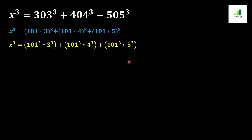In the next step, we take 101³ as a common factor from the whole expression, and after taking 101³ as common, we get 101³ × (3³ + 4³ + 5³) as the remainder.